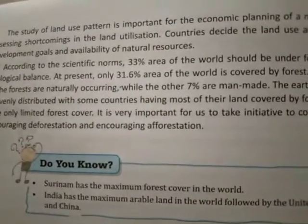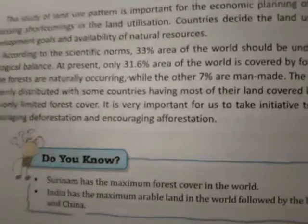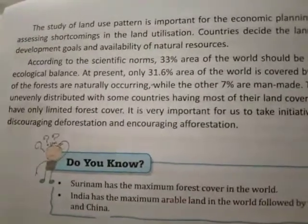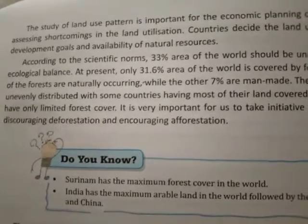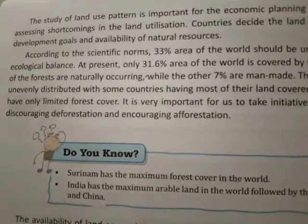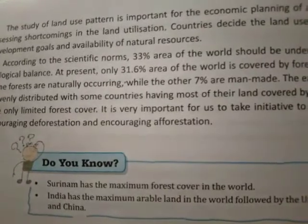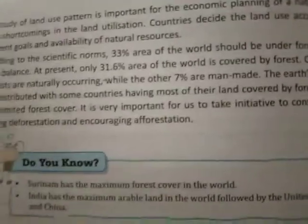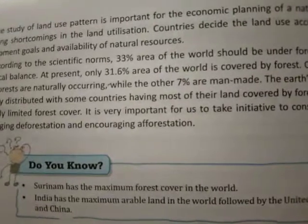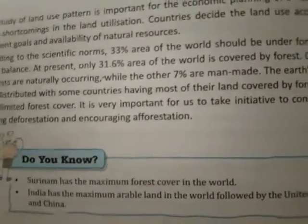According to scientific norms, 33% of the world should be under forest to maintain ecological balance. At present, only 31.6% of the world's area is covered by forest, which is less than required. Of this, 93% of forests are naturally occurring while 7% are man-made.